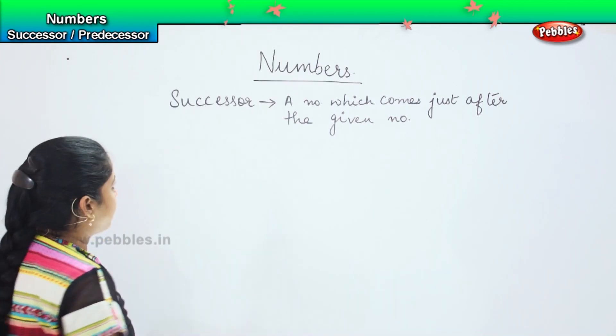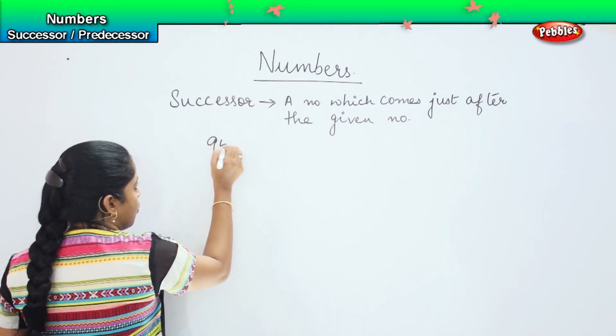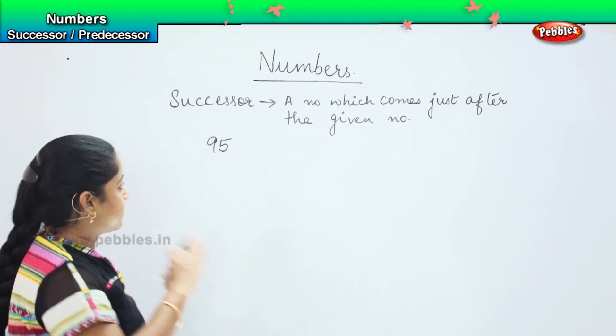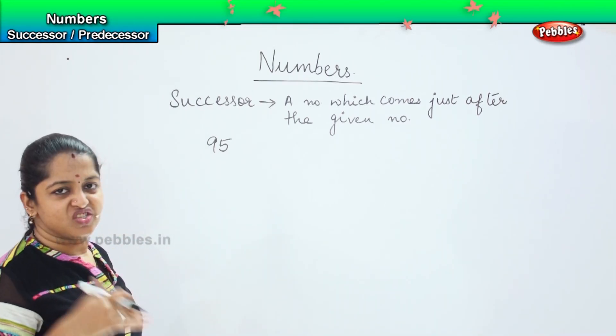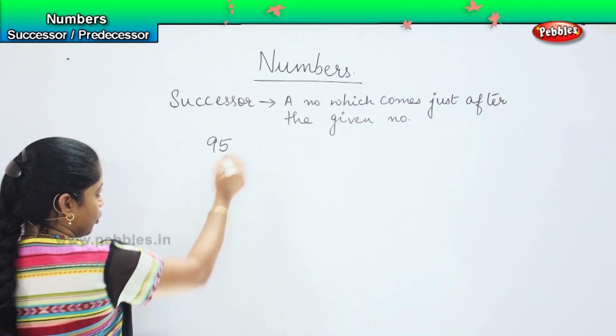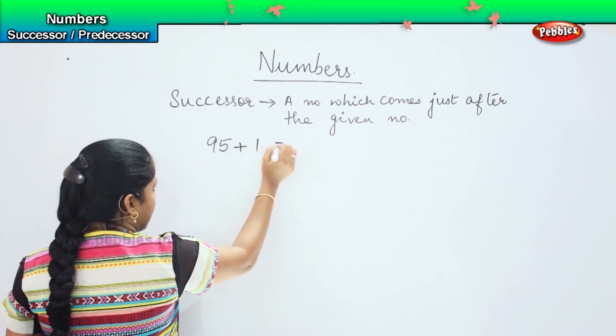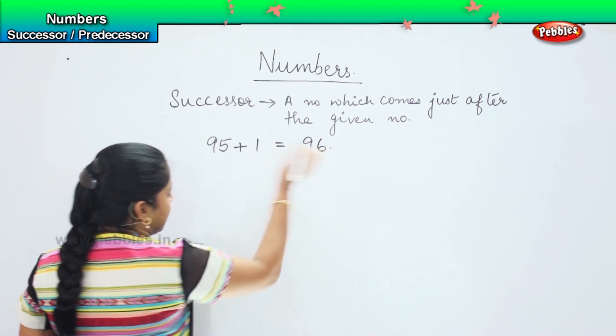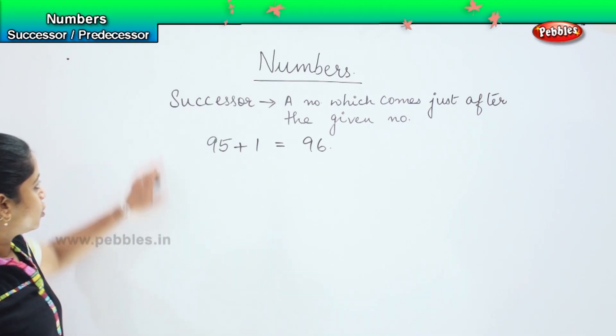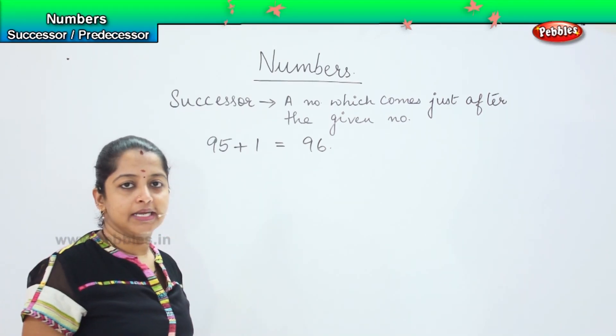For example, if I want to know what is the successor of 95, what is the number which comes immediately just after 95? You have to add 1, so after 95 we have 96, so the successor of 95 is 96.